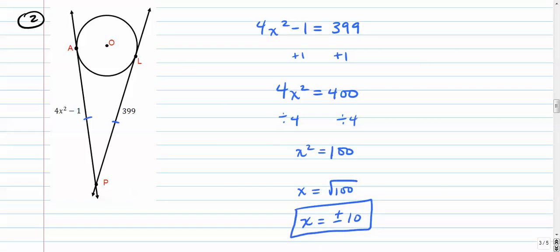Check back to make sure that the negative value here isn't extraneous. We'll check it back in here: 4 times negative 10 squared minus 1. Negative 10 squared is actually positive 100 minus 1, so that's 400 minus 1, that's 399. That equals 399, so that works. The positive one works as well. A lot of times the negative root is not going to work because you can't have negative side lengths, but in this case it's squared so that works fine.